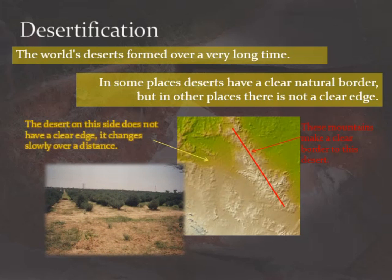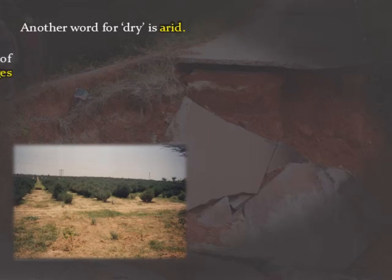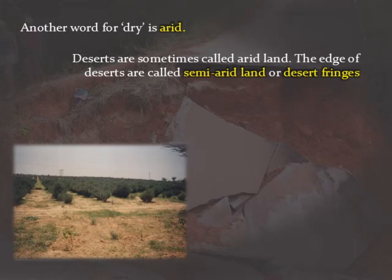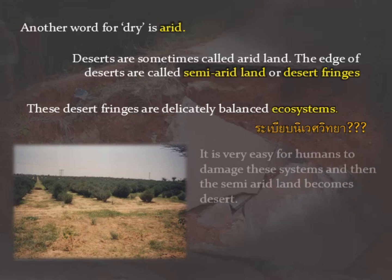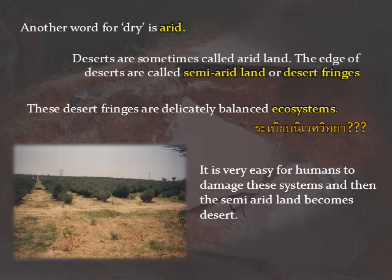In other places there is not a clear edge to the desert, and you might find semi-arid land such as the one in the picture, where it's kind of desert and kind of not. 'Arid' is another word for dry, so desert fringes — the edge of a desert — are sometimes called semi-arid land, meaning partly dry. These desert fringes are delicately balanced ecosystems with only just enough biodiversity and resources to hold the ecosystem together, so it is very easy for humans to damage them, causing semi-arid land to become fully arid — it becomes desert.